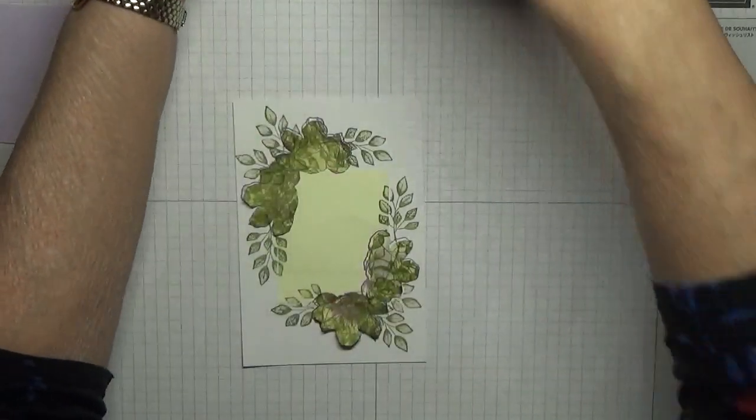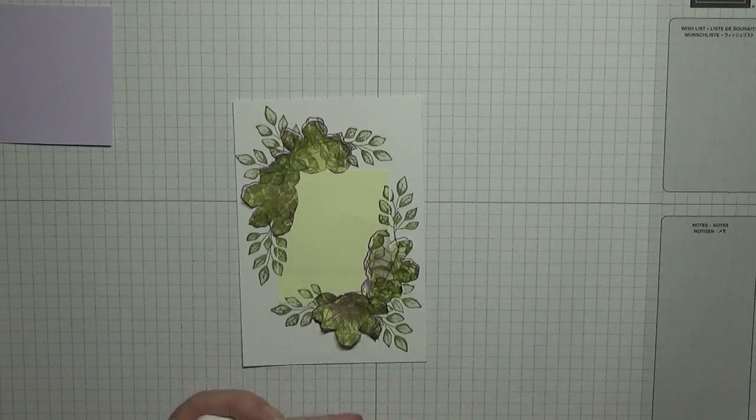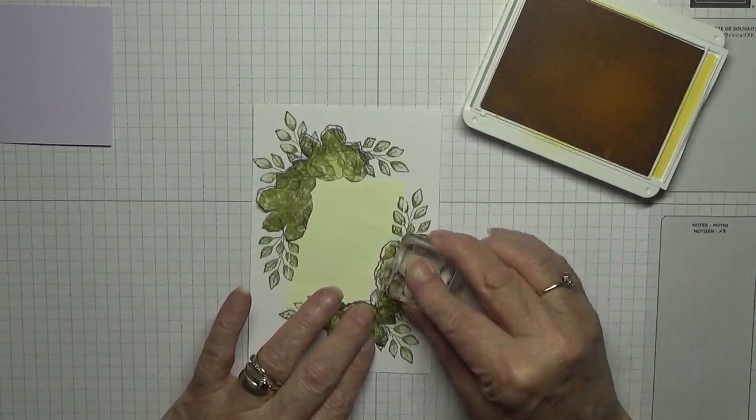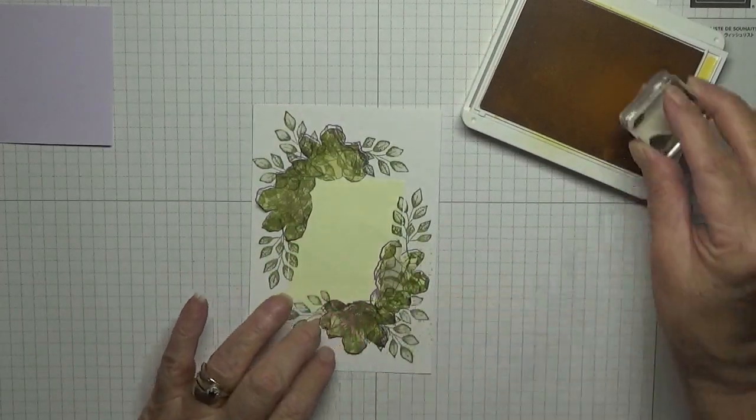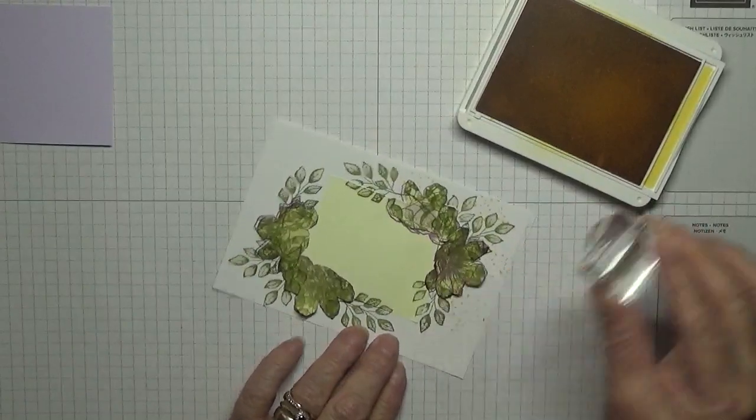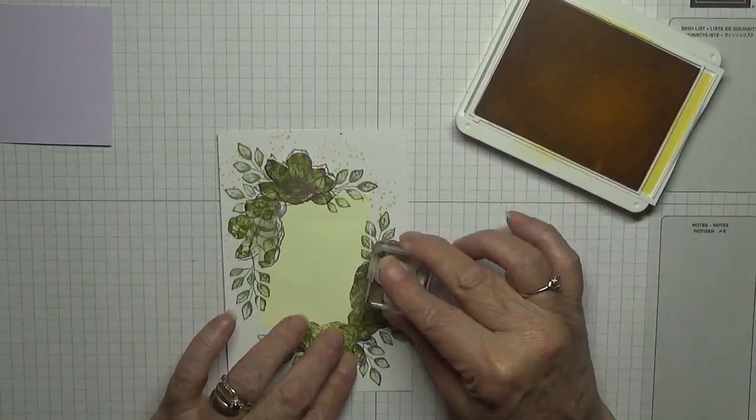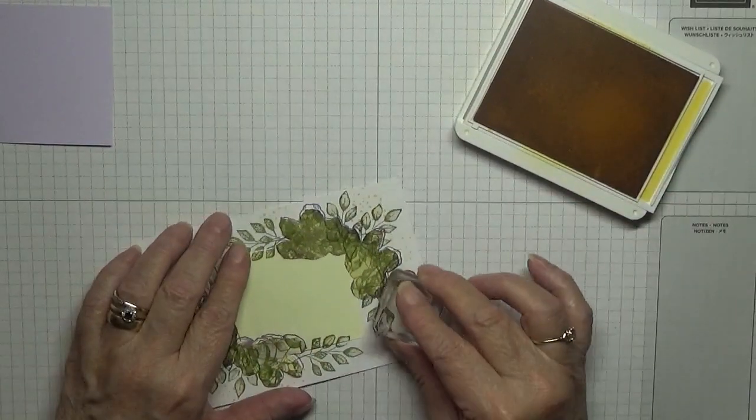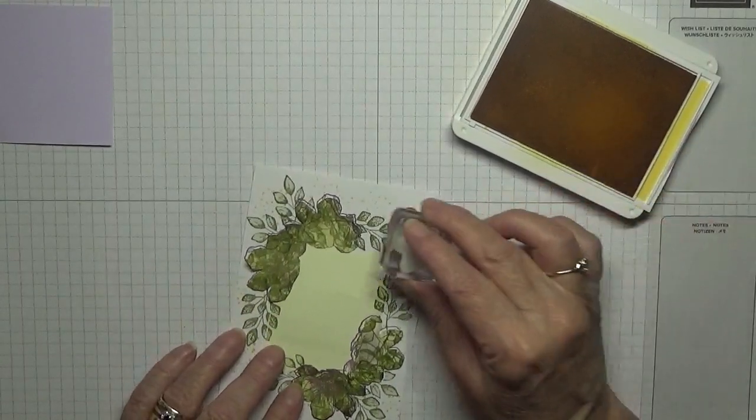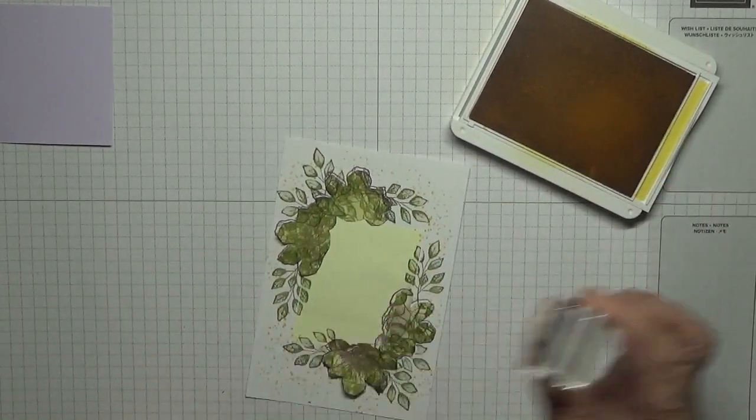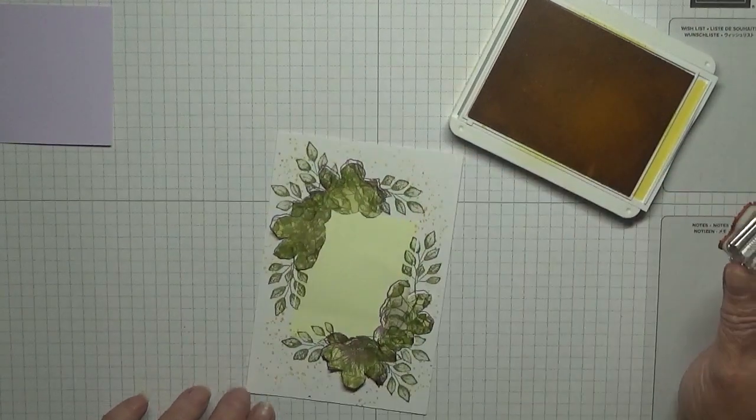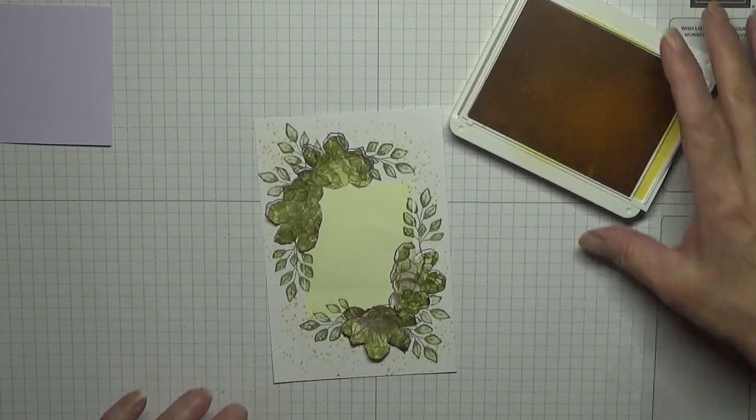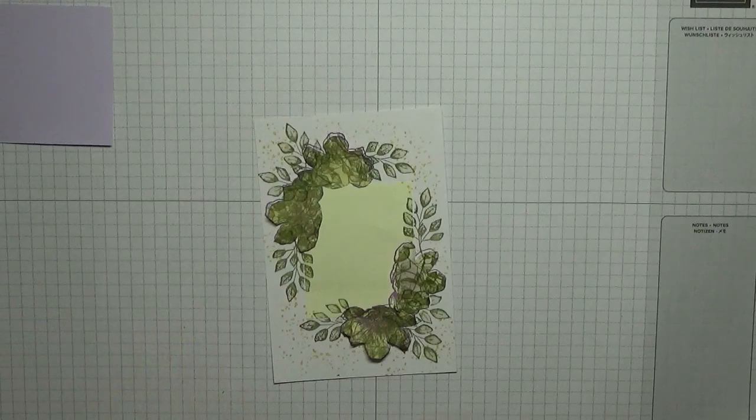Now with daffodil delight, we're just going to go round the outsides and put some yellow dots. It doesn't matter if it goes on the leaves. It's supposed to be blossom anyway. I think that will do. I'm going to leave them on for a minute.